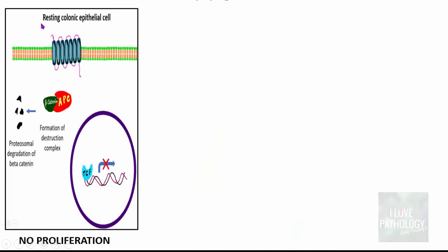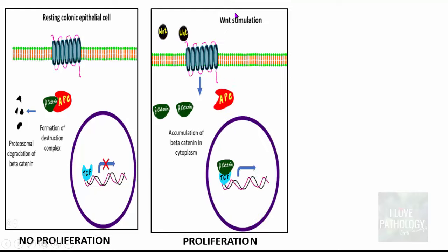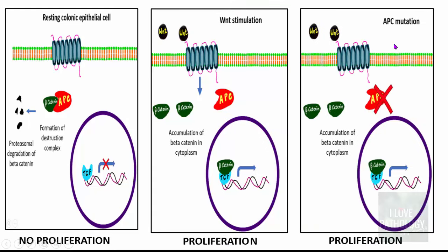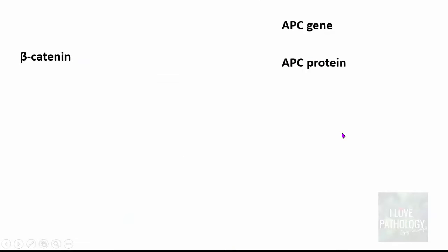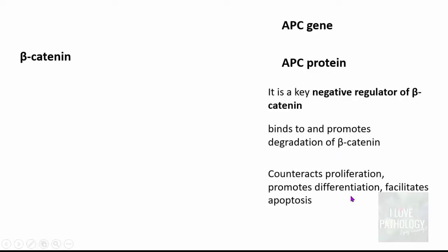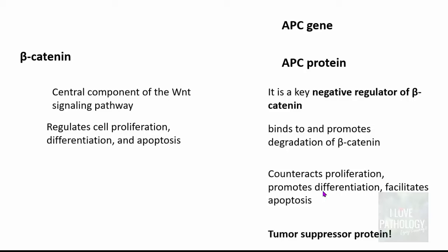To summarize: in a resting colonic epithelial cell there is no proliferation; WNT stimulation causes proliferation; and APC mutation or beta-catenin mutation also causes proliferation. APC protein is a key negative regulator of beta-catenin — it promotes degradation, counteracts proliferation, and that is why it is referred to as a tumor suppressor protein. Beta-catenin, being a central component of the WNT signaling pathway, is responsible for cell proliferation, differentiation, and apoptosis, making it essentially a proto-oncoprotein.